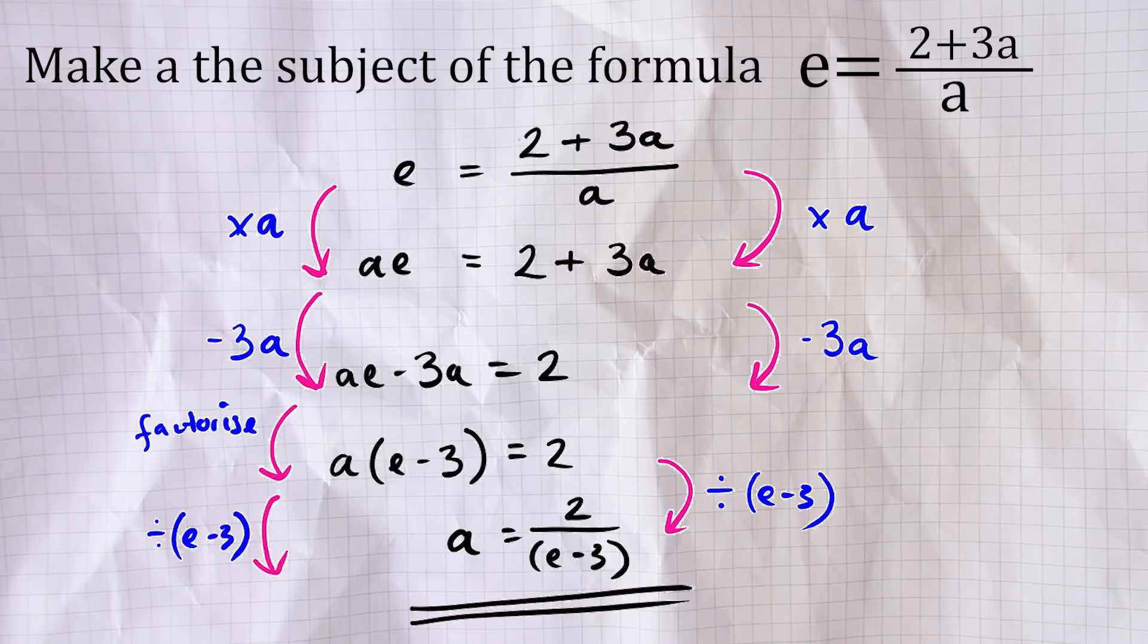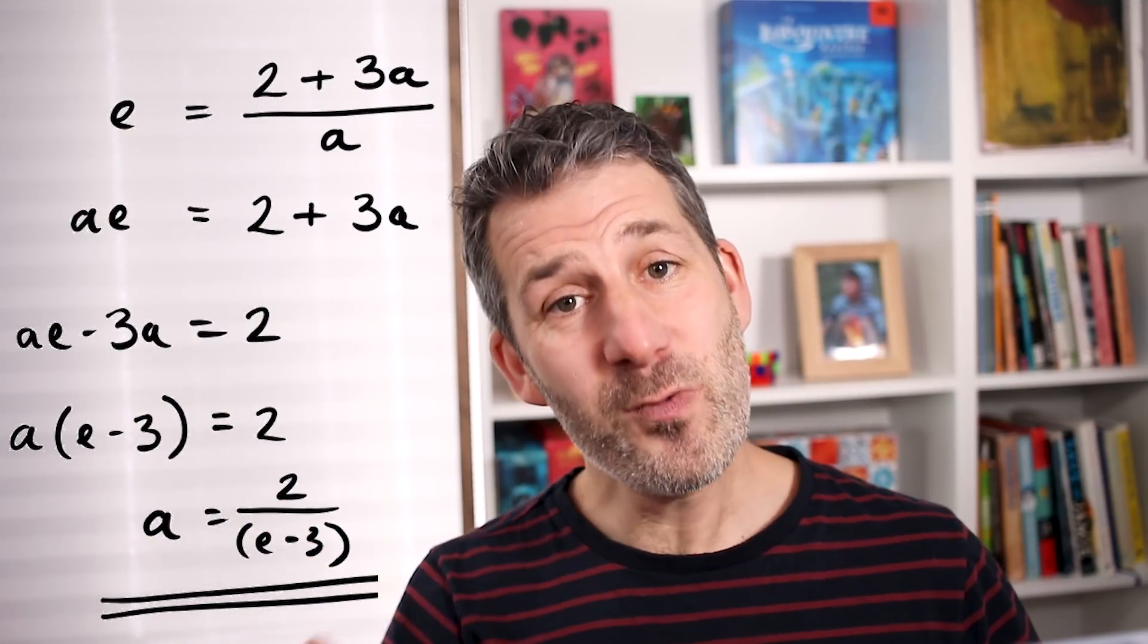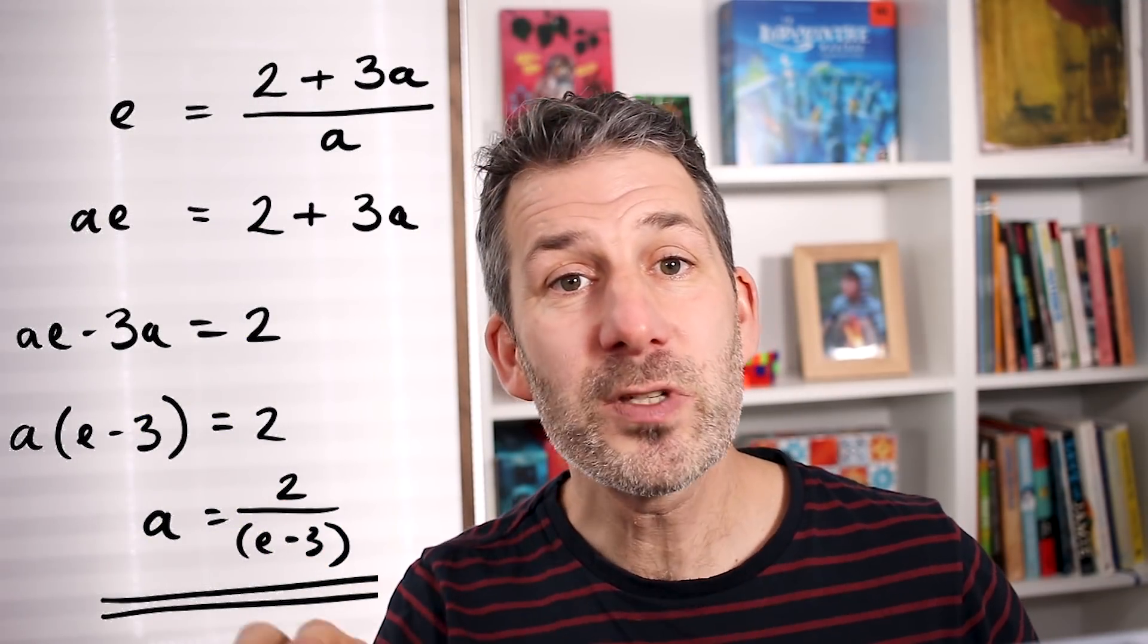I'm going to do one last example. But before I do a quick recap, if you want to get rid of a fraction, then you multiply both sides by the denominator, the number at the bottom of that fraction. And if the thing that you are trying to make the subject is at the bottom of a fraction, then you will definitely want to do that. And what you are looking to do with these is to get all the bits containing that letter on the same side of the equation, then you factorize, then you divide.